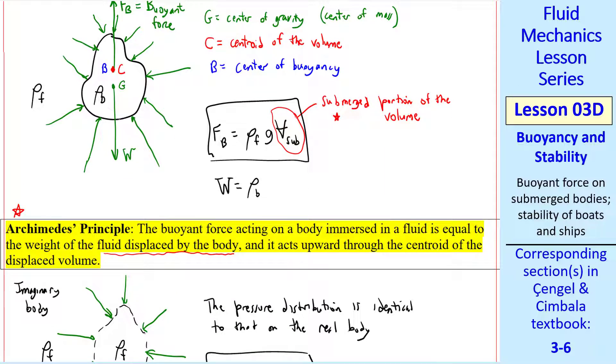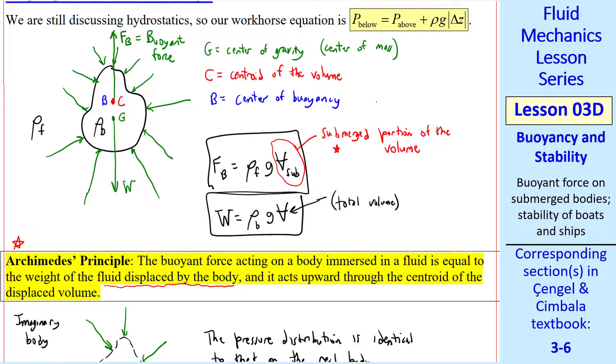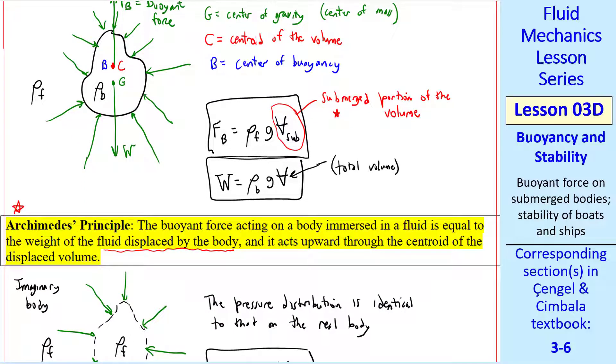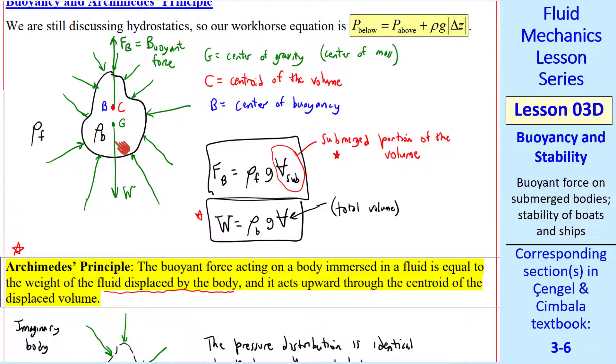For our real body, let's let the density be ρ_B, and then the weight is ρ_B g times V. This V is the total volume, because the weight of the object doesn't depend on how much of it is submerged. In this first case, however, the body is fully submerged, so V_sub and V are the same. The net downward force would be W minus F_b, where we'll use these two equations.